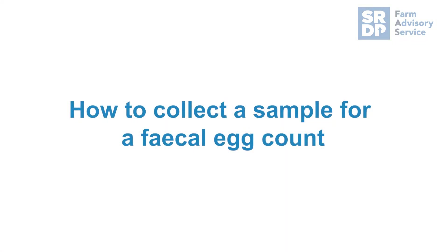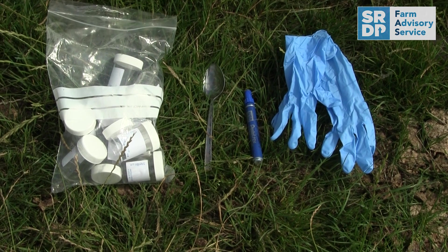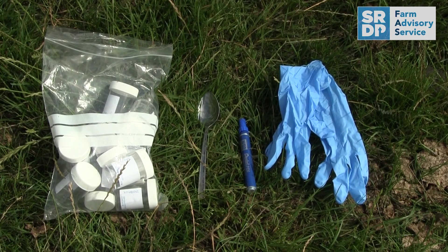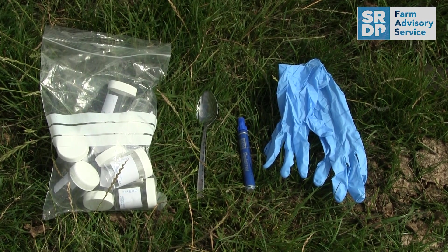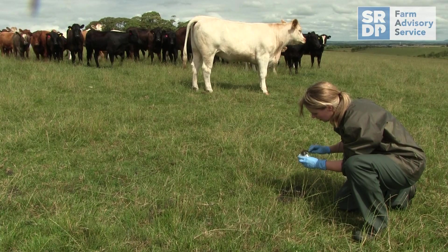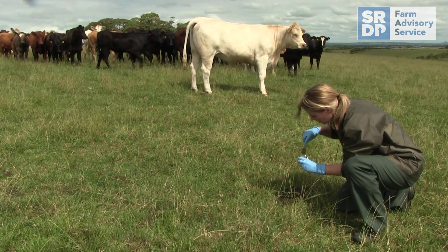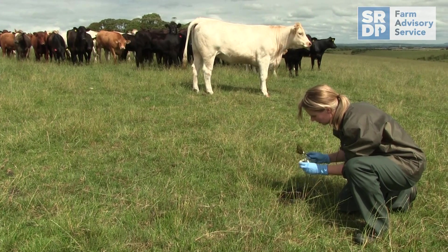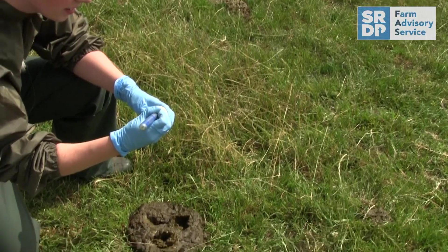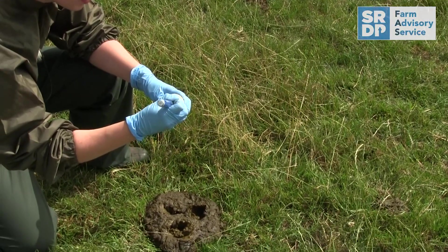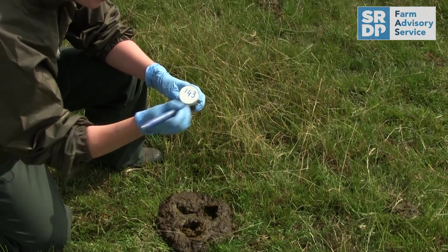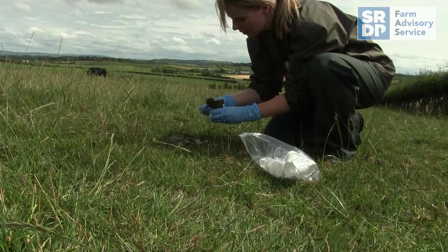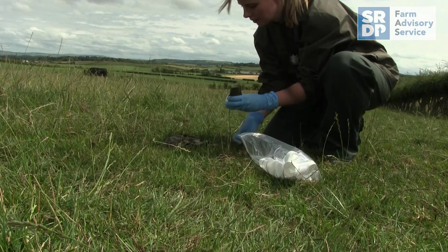You need four heaped dessert spoonfuls per animal. Take from at least three areas of the dung pat and mix well. Collect samples in lidded pots and eliminate air, otherwise eggs may hatch and not be counted. Label the pots with the animal ID, and if the samples are for routine monitoring, take ten samples per management group to give you a representative sample of what's going on in that group.